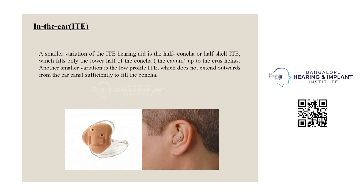In-the-ear ITE hearing aids — the smallest variation is the half-concha or half-shell ITE, which fills only the lower half of the concha up to the crus helix. Another smaller variation is the low-profile ITE, which does not extend far enough from the ear canal to fill the concha. The hearing aid is fitted in the ear up to after the crus helix.